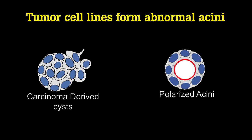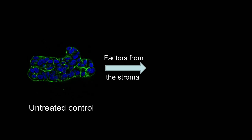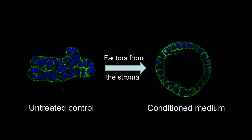The 'aha moment' came when I realized that other factors from the tumor were required for tumor cells to go from a solid ball into what we call a polarized acinus. I have identified the growth factor required to drive this transition from an amorphous mass to a polarized ball of cells.